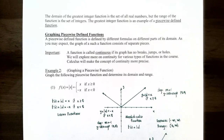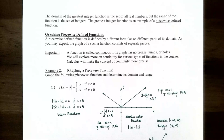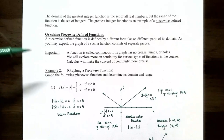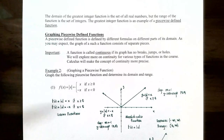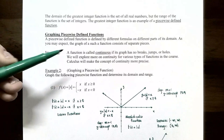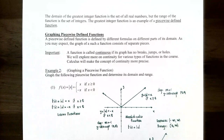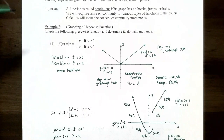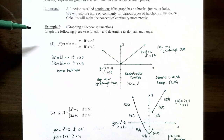A piecewise defined function is defined by different formulas on different parts of the domain, so different pieces of its graph look like different types of functions. A function is called continuous if the graph has no breaks, jumps, or holes. In Example 2, we graph piecewise defined functions and determine domain and range from the graph.